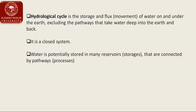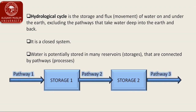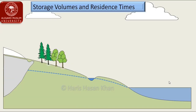In the hydrological cycle, water is stored in different reservoirs or storages, and these reservoirs are connected by pathways or processes. Here is a conceptual depiction of two different storages connected by such pathways. We will now discuss the different stores of water, their relative volumes, and the residence times of water in each store.